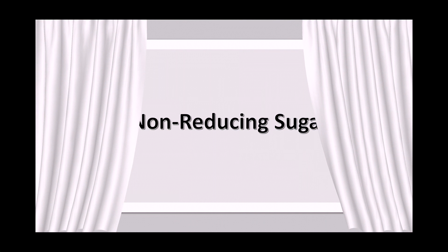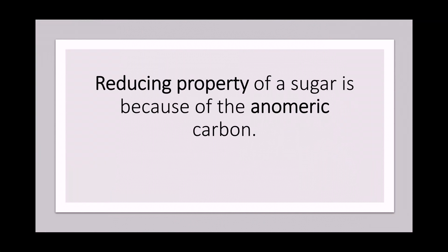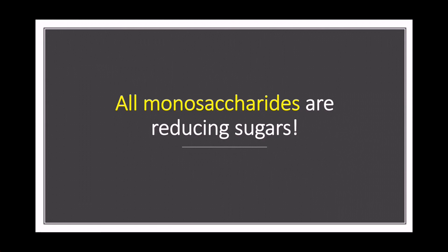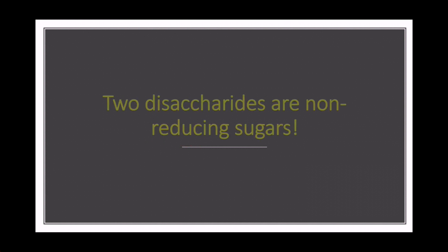Non-reducing sugars. The reducing property of a sugar is due to the anomeric carbon. In all monosaccharides, the anomeric carbon is free, so all monosaccharides are reducing sugars. Only two disaccharides are non-reducing sugars.